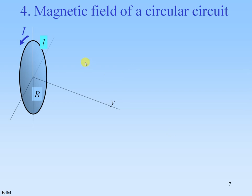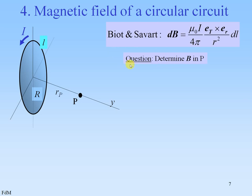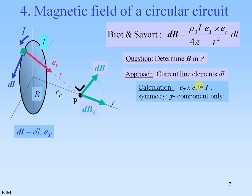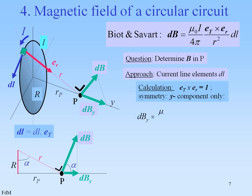A circular circuit: current i, radius r, and the question is to determine B in point P. We have current line elements with vector DL, and a direction vector to point P, ER. We see that the vector product ET times ER — in which ET is along DL — is always one, because DL and ER are always perpendicular. So there will be symmetry and the only component remaining is the Y component. Thus we have to calculate DB-Y, as seen here.